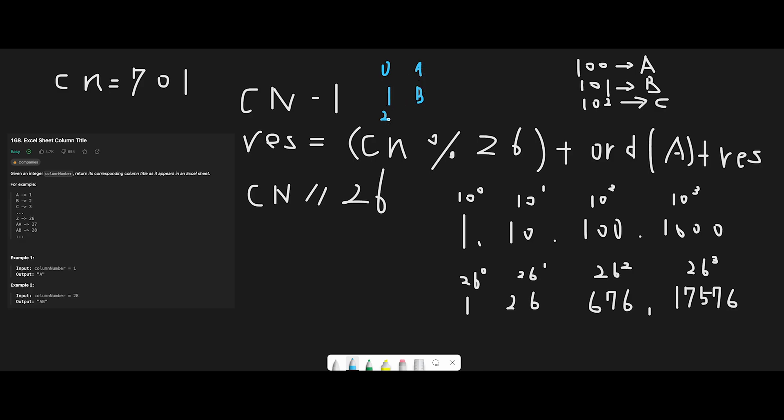And 25 should be Z. The problem is, this problem starts from A is 1, B equals 2, and C is 3. So there is a one difference. That's why we need to subtract minus 1 from current column number.